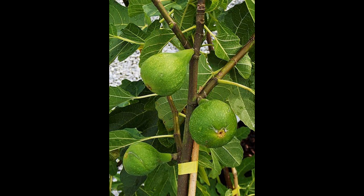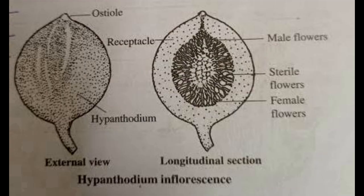Pollination in fig is a fine example of co-evolution. The inflorescence of fig is a special type called a hypanthodium. The receptacle is fleshy and forms a hollow ball-like structure opening outside by a small opening called the ostiole. The female flowers are towards the base and the male flowers towards the ostiole. This inflorescence is mutually associated with and pollinated by gall wasps.